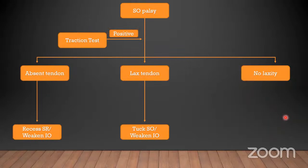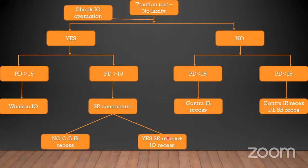Summary of treatment: if SO palsy traction test is positive, check if the tendon is absent or not. If tendon is absent: resection of SR and recession of IO. If tendon is lax: weaken IO. If no laxity: check for IO overaction. If IO overaction is present and prism diopters are more than 15: weaken IO. If more than 15 PD: check for SR contracture — if yes, add contralateral IR resection. Thank you.